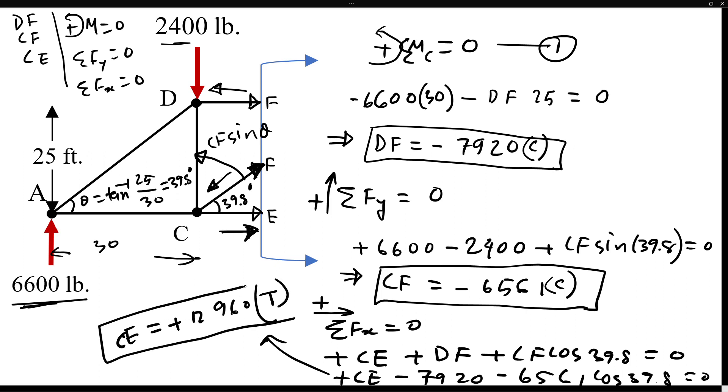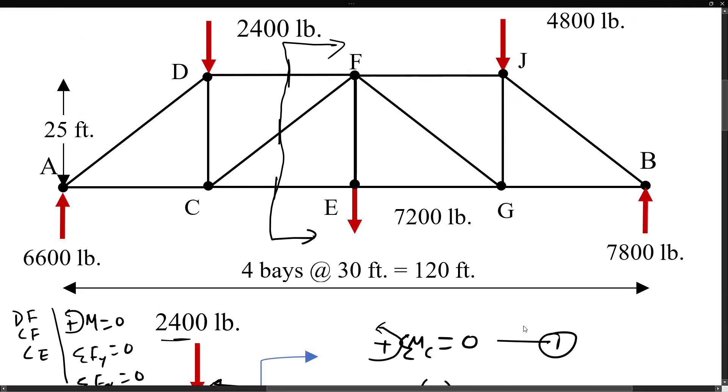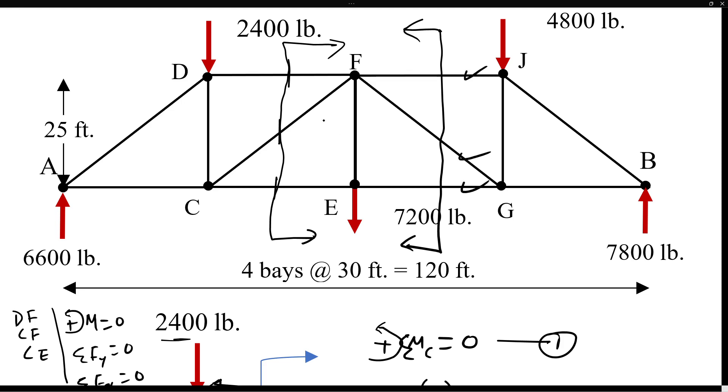This way you can take a section anywhere. You can take, for example, a section here, ignore everything to the left side, so then you'll be finding forces for this member, this member, and this member. So you already know this one, this one, and this one. And then what you can do is take a section right here and ignore everything on this side, so you'll find this guy and this guy.